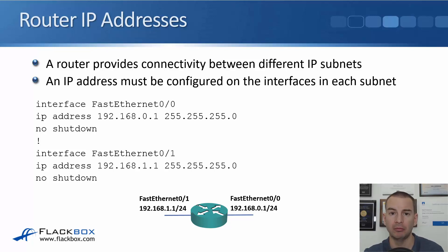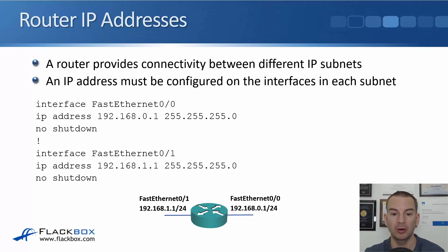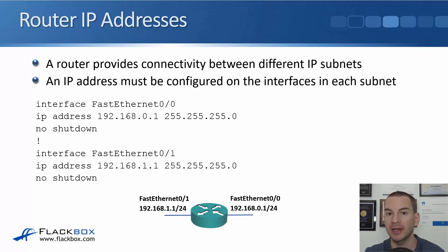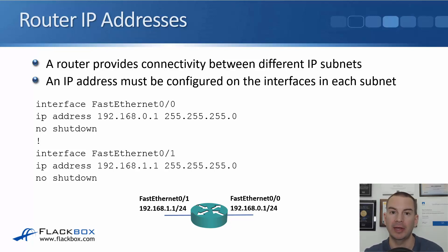After we have configured this, the router is going to be able to route traffic between those two networks. As well as being able to route traffic, it also gives IP connectivity to the router itself. So after we've done this, we would be able to open up a Telnet or SSH client like PuTTY and connect to the router to manage it remotely — more convenient than having to use a console cable every time.